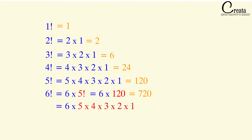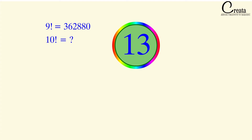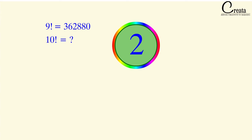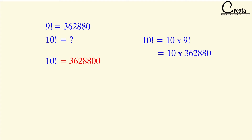Now a small question for you. The value of 9 factorial is 362880. You have to calculate the value of 10 factorial, and you are having only 15 seconds. Your time starts now. The answer is 3628800. How we have calculated this? We multiplied 10 with 9 factorial. 10 into 9 factorial is basically 10 factorial, and we know the value of 9 factorial given in the question, so we easily got the value of 10 factorial.